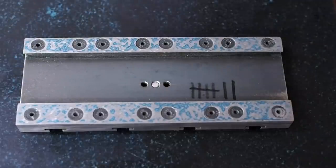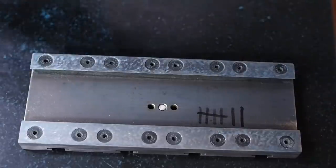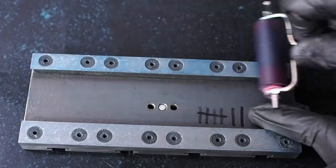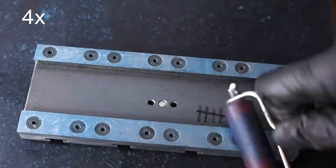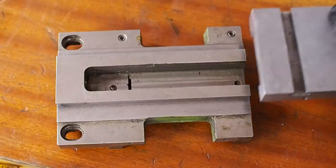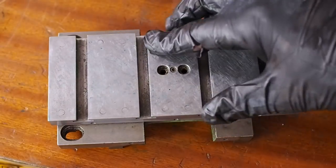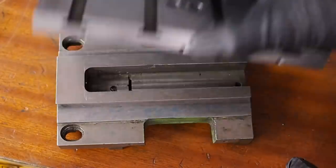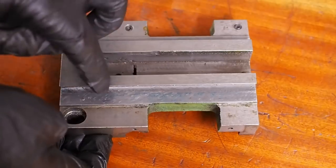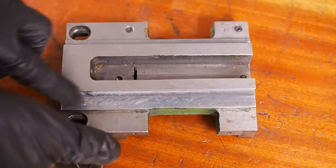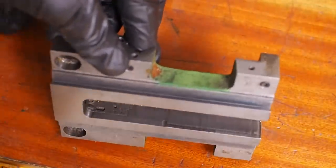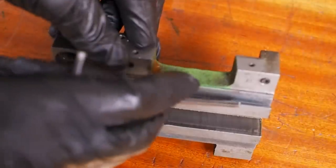Next up to check the flat ways on the saddle I need to blue up the cross slide as a master so let's see how this looks. Okay it's rather a light bluing but you can see there's a fair bit through the middle and then it drops off at the end. On this side it appears to be mostly touching closer into the v-way so I'll get on with scraping that.